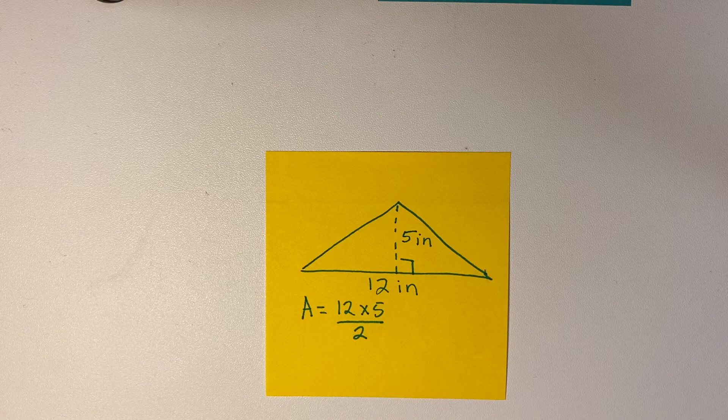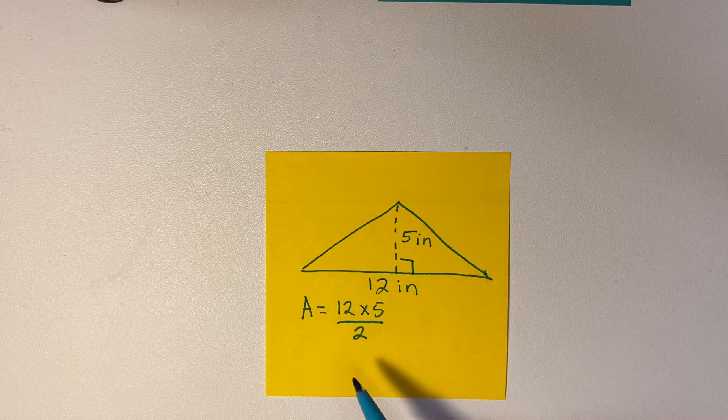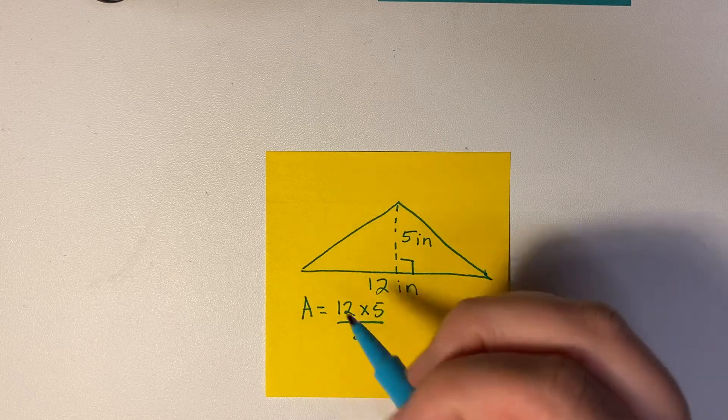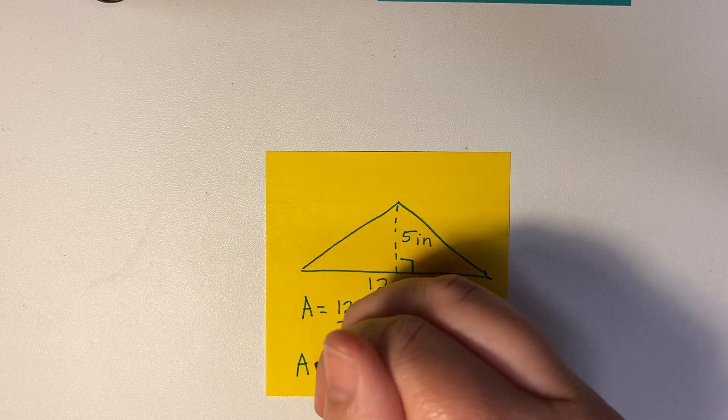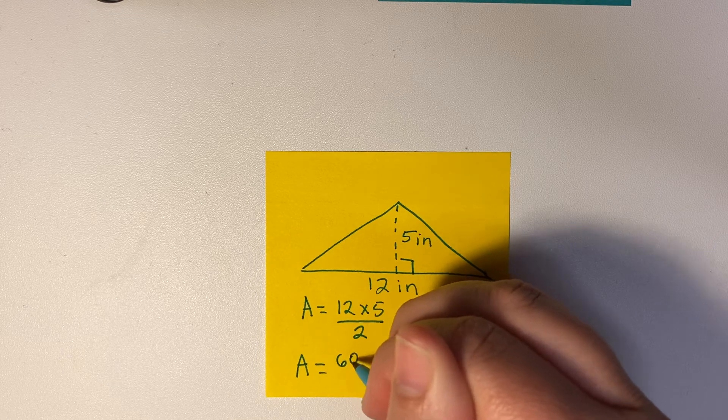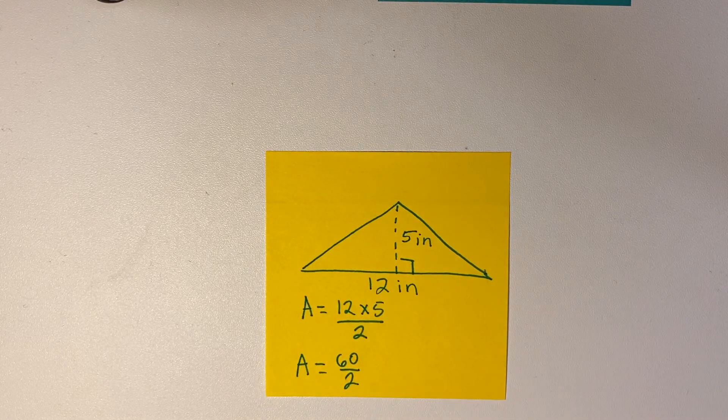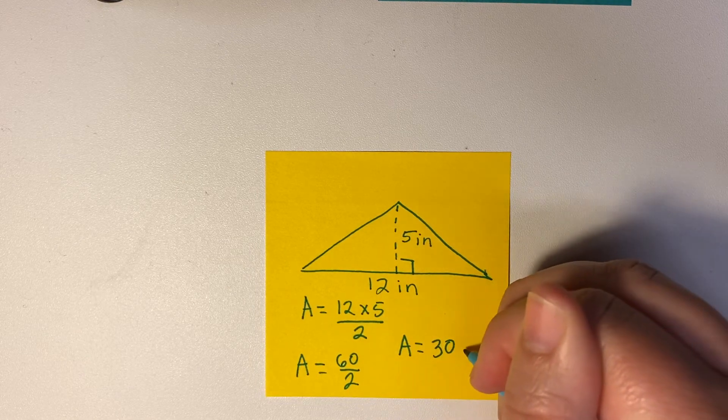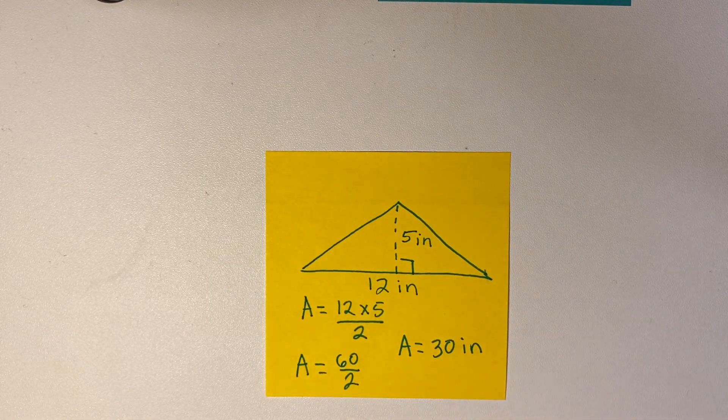Which once again you could do this in your head, right? You can do 12 times 5 equals 60, 60 divided by 2 is 30. So let's just write it out, and then our final answer would be 30 inches. But it's not a length, so it's not going to be 30 inches, it's going to be inches squared.